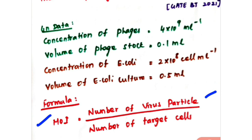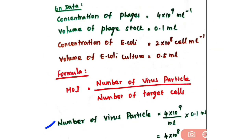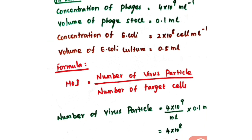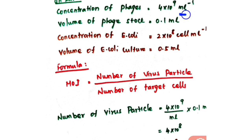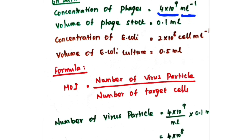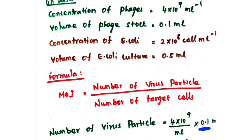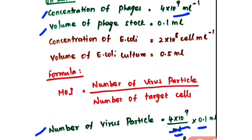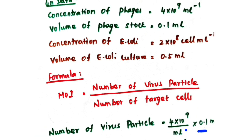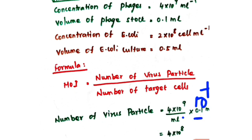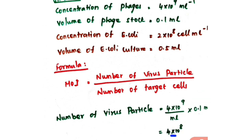MOI equals number of virus particles divided by number of target cells. Number of virus particles is calculated by multiplying the concentration of phages by the volume of phage. Concentration is 4 × 10⁹ ml⁻¹, and volume is 0.1 ml. So: 4 × 10⁹ × 0.1 = 4 × 10⁹ × 10⁻¹ = 4 × 10⁸. So the number of virus particles present in 0.1 ml is 4 × 10⁸.